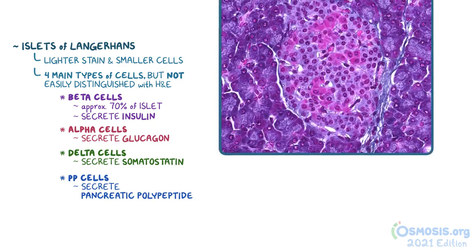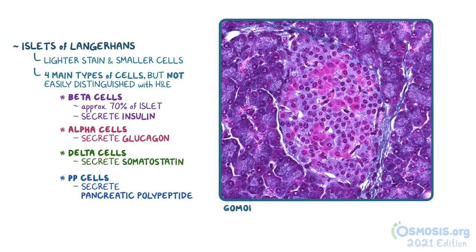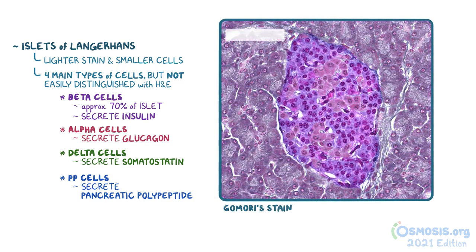This image of an islet was stained with Gomory stain, which allows us to differentiate the beta cells that stain bluish-purple and the alpha cells that stain pink, and we can also see just how much of the islet is made of beta cells. In individuals with type 1 diabetes, there will be a decreased number of beta cells as a result of autoimmune destruction of these cells specifically.